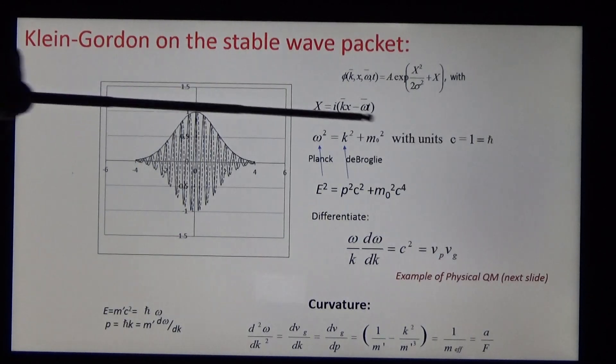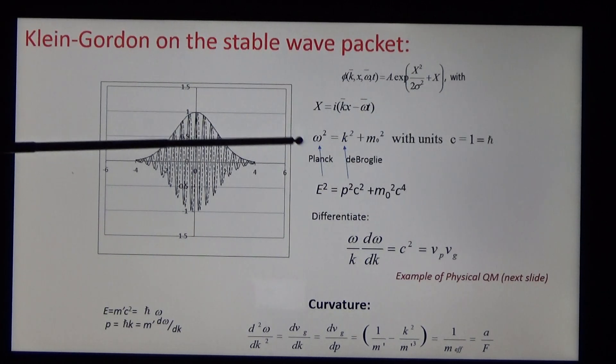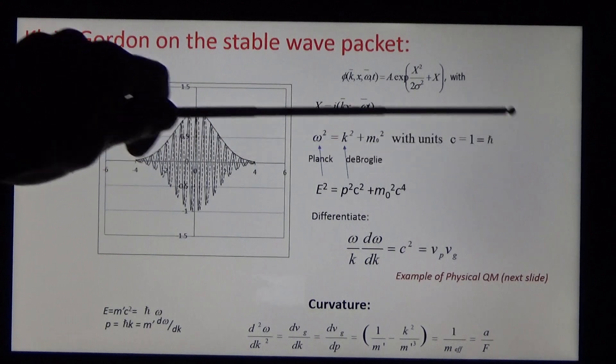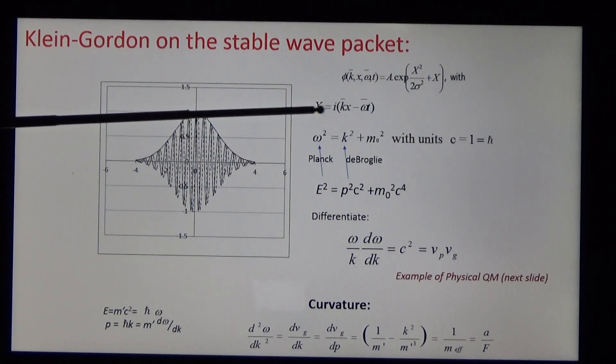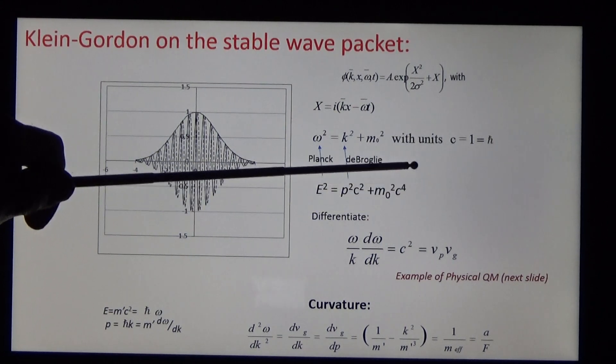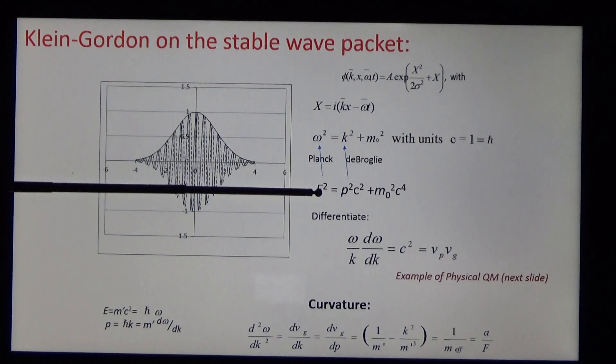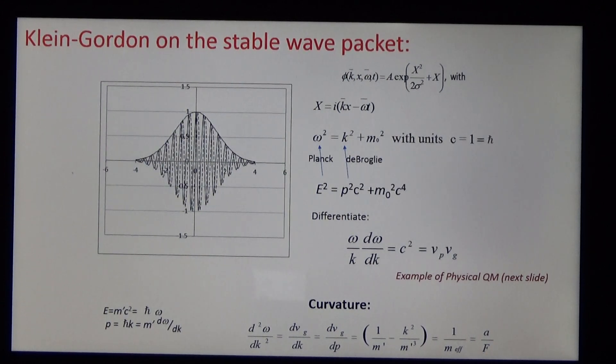Here's the packet. The result of the operation is a second order equation, simplified here with simple units. This equation is exactly the same as you get if you take Einstein's formula in special relativity and substitute for energy with Planck's law and for momentum with the de Broglie hypothesis.